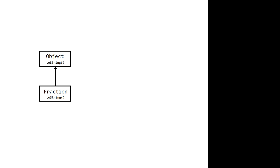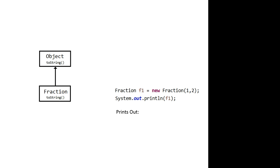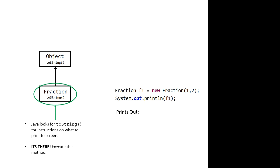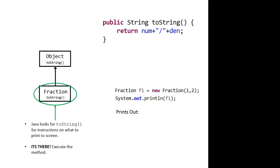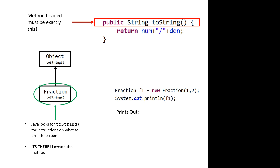So then the question is, what if I want to change that? To change that, what I do is override the toString method. That means I'm going to write a toString method that has the exact same header in my fraction class. That's where I put the specific instructions about how to print a fraction object. Now if we run the exact same line, note the difference is that toString is now defined in the fraction class. Java finds it there and executes that method — it will never go up to the object class. Now it prints out '1 over 2', which is a much more useful output for a fraction object.